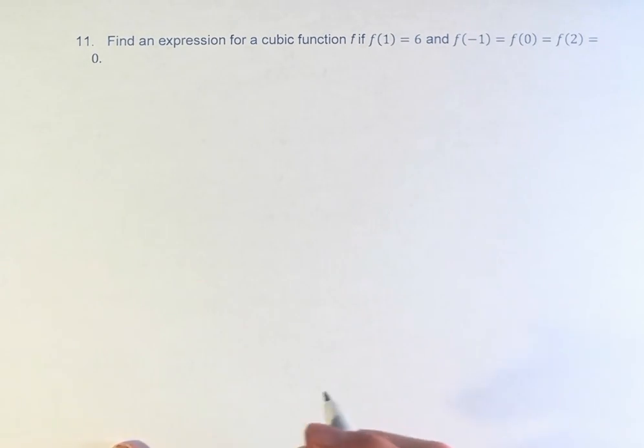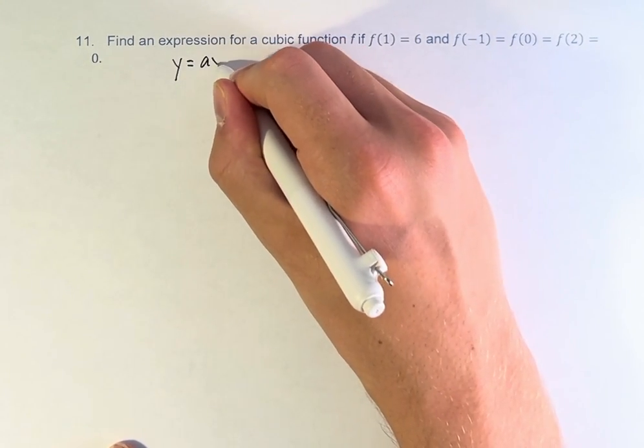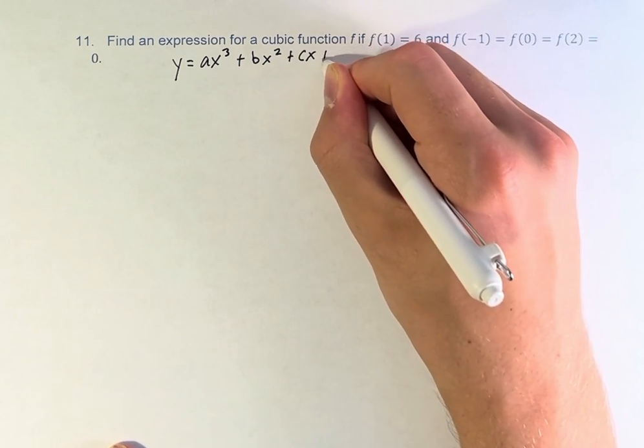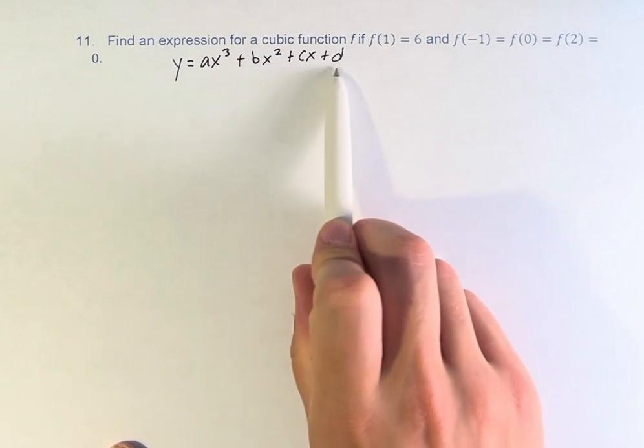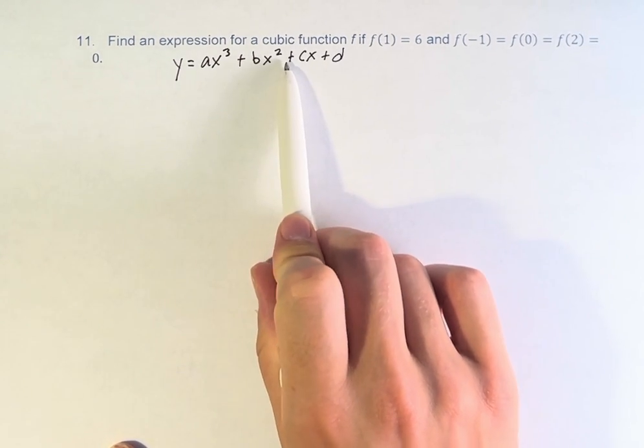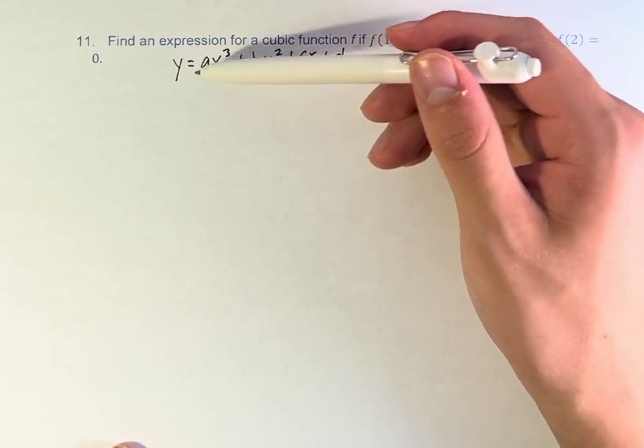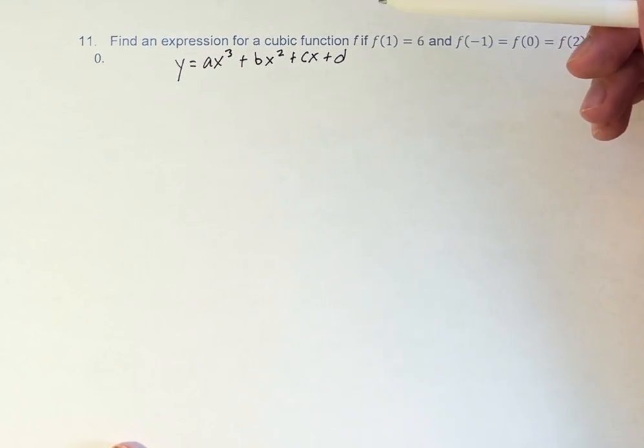So first, let's write the general form of a cubic function. y is equal to ax cubed plus bx squared plus cx plus d. What we're going to do is find the points that we know are on the graph of this function, and therefore the x and y values that will satisfy this equation, and we can therefore solve for a, b, c, and d and get our actual function.